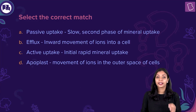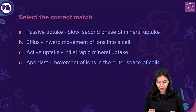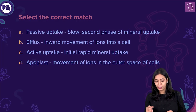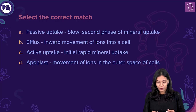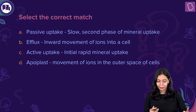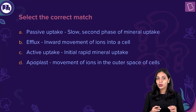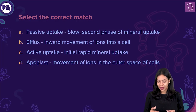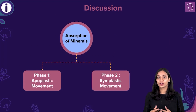Here's the next question: Select the correct match. Option A: passive uptake — slow second phase of mineral uptake. Option B: efflux — inward movement of ions into a cell. Option C: active uptake — initial rapid mineral uptake. Option D: apoplast — movement of ions in the outer space of cells. This question contains several different terms — efflux, passive and active uptake, and apoplast — which we must understand before answering. First, let's look at how minerals are absorbed from the soil by plant roots.